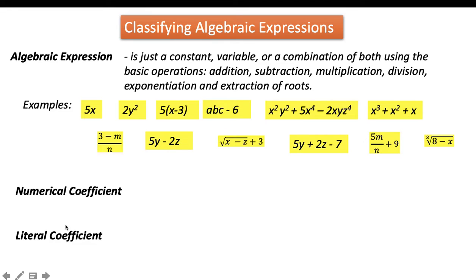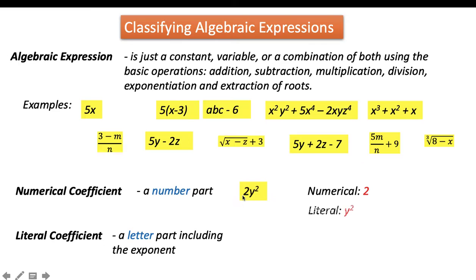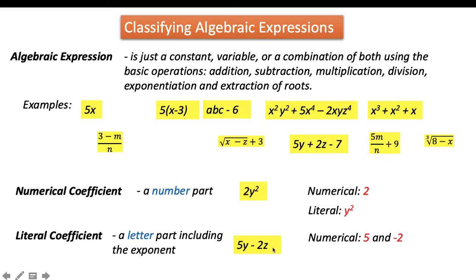What do we mean by coefficients? We have two types: the numerical coefficient, which is the number part, and the literal coefficient, which is the letter part including the exponent in an algebraic expression. For example, in 2y squared, the numerical coefficient is 2 and the literal coefficient is y squared. In 5y minus 2z, the numerical coefficients are 5 and negative 2, and the literal coefficients are y and z.